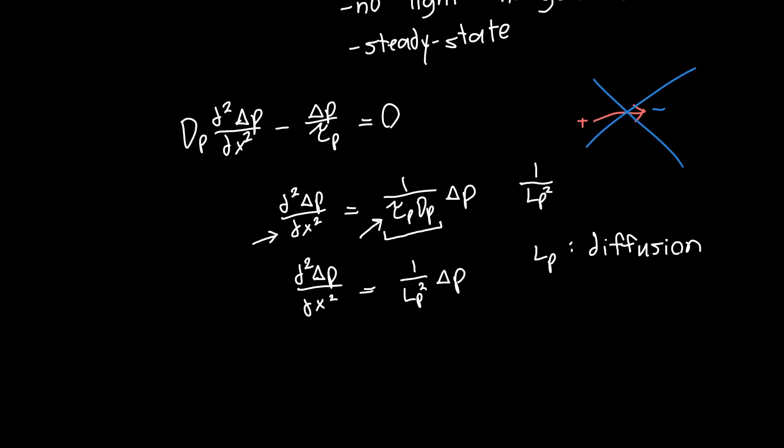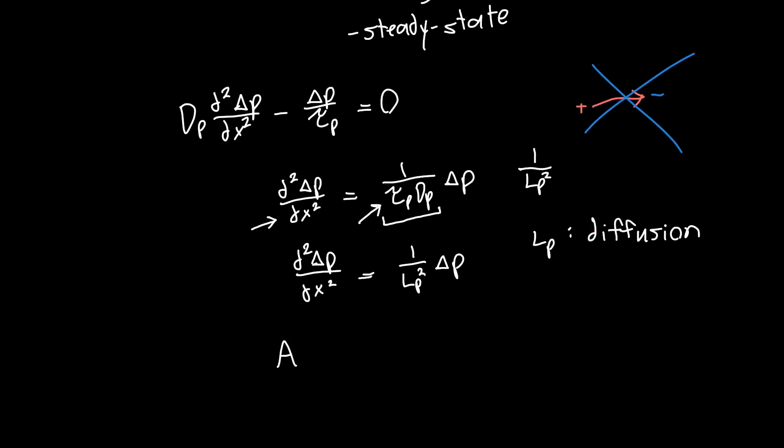And in general, the solution to this equation looks like some coefficient A times e to the plus x divided by the diffusion length, plus some other coefficient B times e to the minus x over LP. So this is our delta P as a function of x. And here we're going to restrict x to go from zero to the base width. So we only care about the base region at this moment in time.